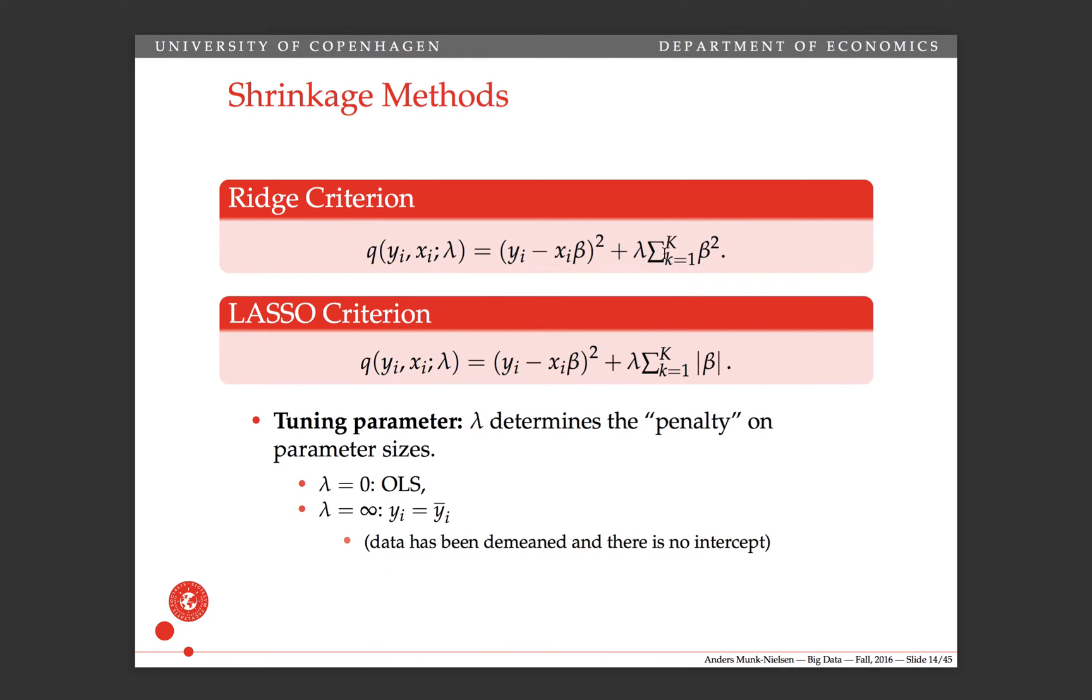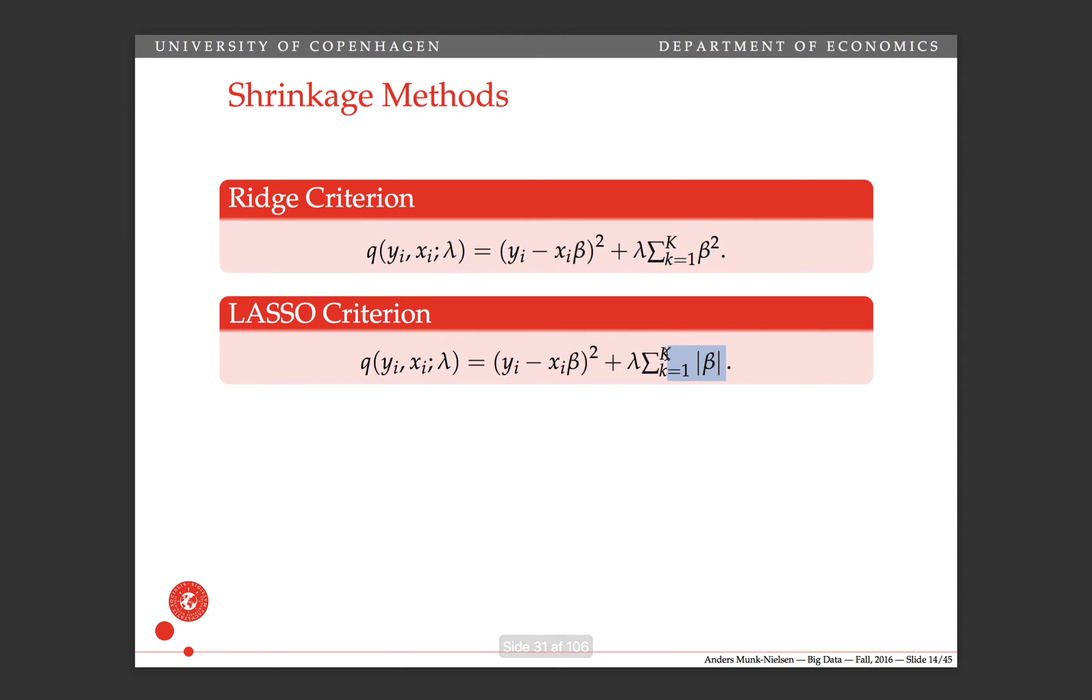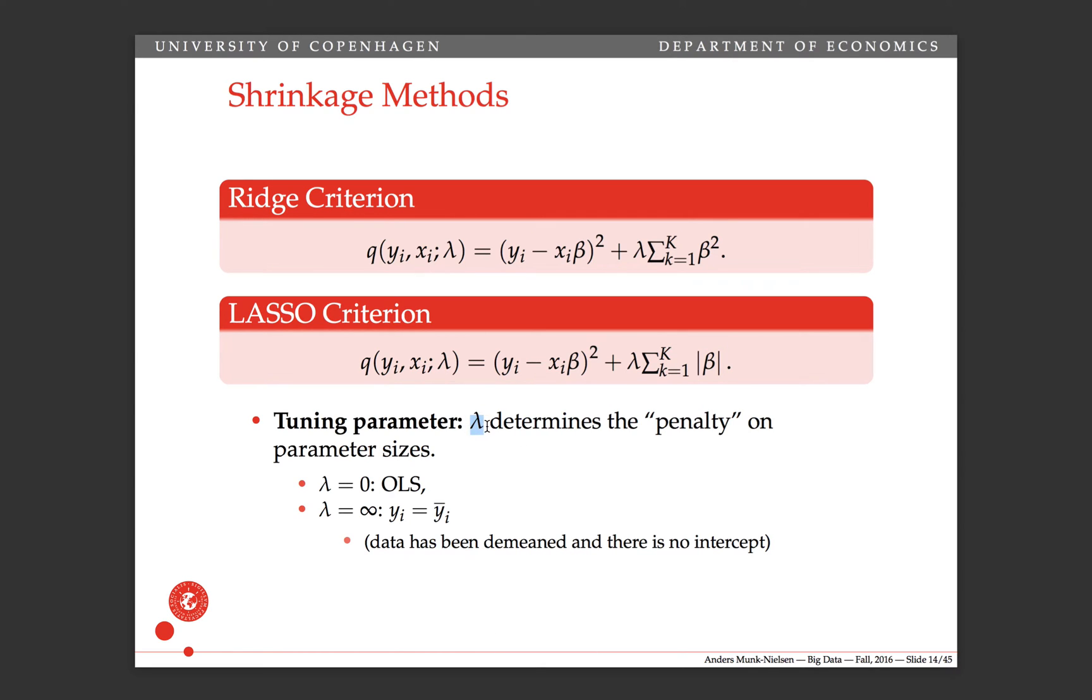It turns out that they have very different properties, these two. Namely, that LASSO will tend to set some coefficients to zero, whereas Ridge will just tend to shrink all of the coefficients towards zero but not actually set any of them equal to zero. Here we have an example of a tuning parameter that determines the penalty on the size of the parameter values. In the case where lambda is zero, we have OLS for both of these. And in the case where lambda is equal to infinity, we're going to set all the betas equal to zero, and our prediction is just going to be the mean. There's an important comment here that we have to demean the data before estimation.